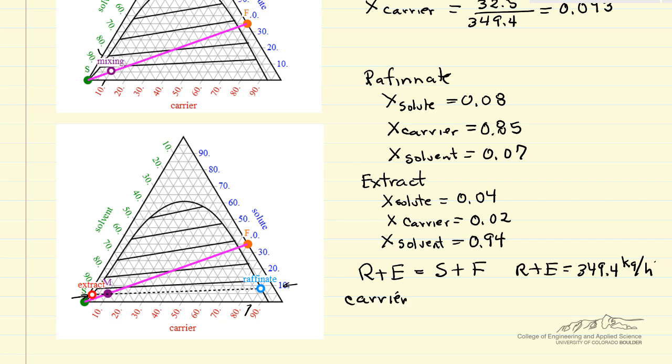And then I can do a balance on the carrier, and the carrier in the raffinate, 0.85 times the raffinate flow rate, plus the carrier in the extract, 0.02 times the extract flow rate, equals the total amount of carrier that we had, and we calculated that earlier, 0.65 times the feed, or 32.5, again, kilograms per hour.